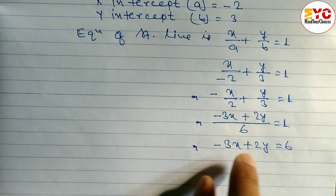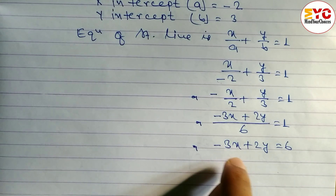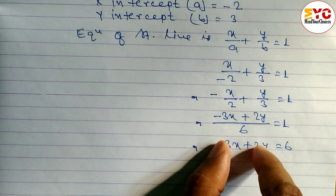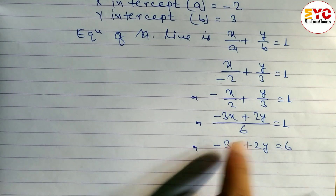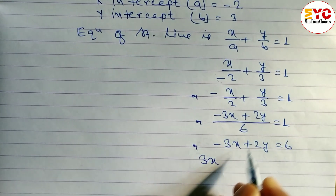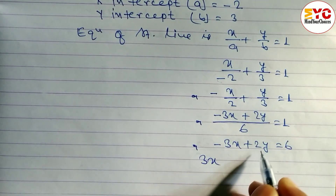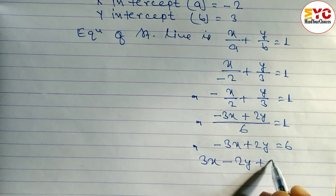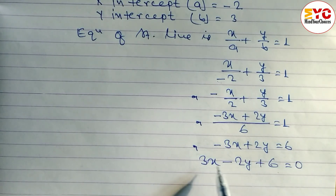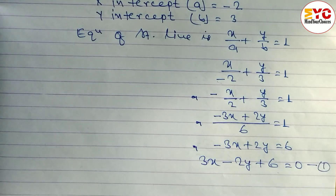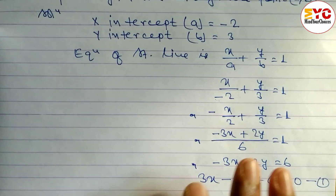The coefficient of x is negative, so we convert it to positive by bringing all terms to the right side, changing the signs. We get 3x − 2y + 6 = 0, which is the required equation of the straight line — call this Equation 1.